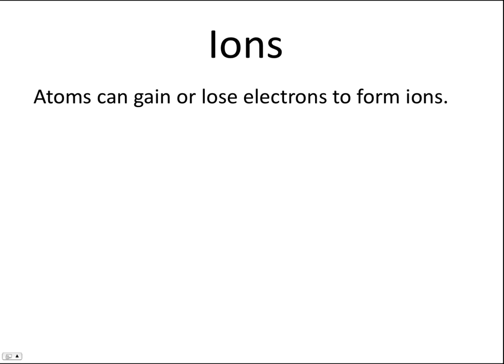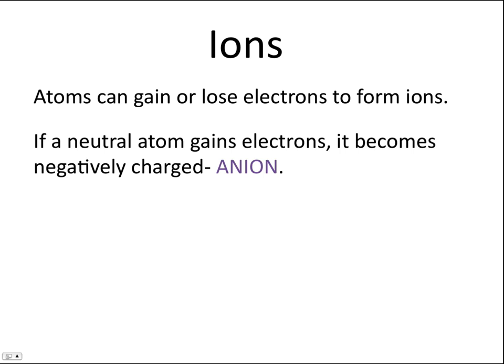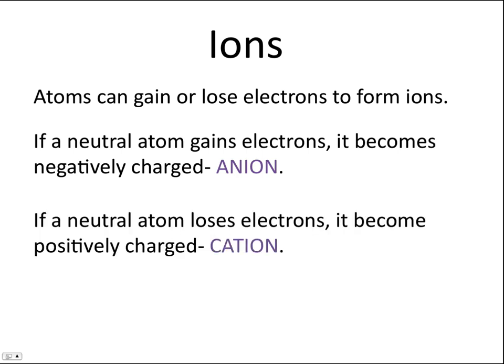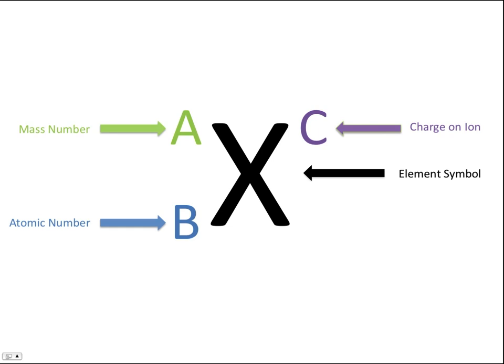Now let's talk about ions. A neutral atom can either gain or lose electrons to form ions. If a neutral atom gains electrons, it becomes negatively charged, and we call that ion an anion. Electrons are negatively charged, so gaining electrons makes the atom negatively charged. If a neutral atom loses electrons — losing that negative charge — it becomes positively charged, and we call that ion a cation. This means we need to add one more number to our chemical symbol.